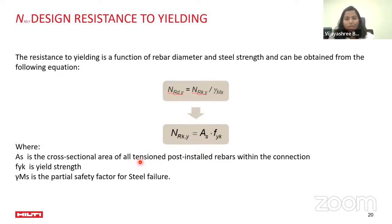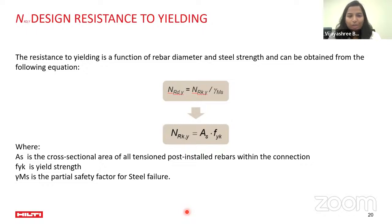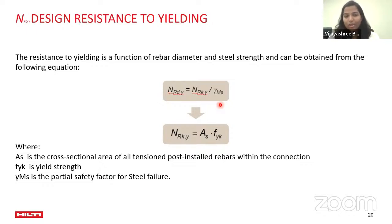The design resistance to yielding is the steel strength factor obtained from the standard equation: it is mainly a function of the cross-sectional area multiplied by the steel yield strength, divided by the partial safety factor for steel failure gamma-MS. This formula is the same as used in Eurocode 2 for cast-in rebar, because the whole principle of post-installed rebar is for it to behave just like cast-in rebar.